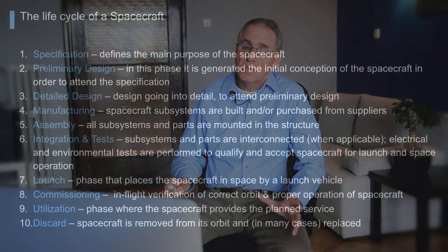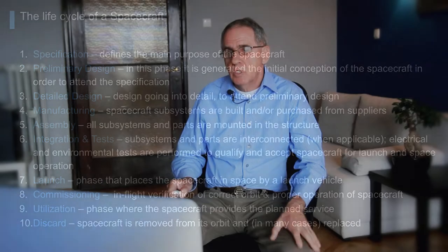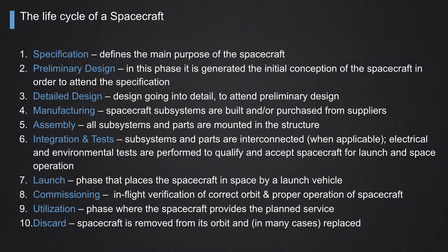The second phase is called preliminary design. After having the specification, we generate the initial conception of the spacecraft to meet that specification. Here we do a rough design: what are going to be the main parts of the spacecraft, roughly - the geometry, the size, roughly the size of the solar arrays. The main parts of the spacecraft, but not in detail yet. Just the preliminary design.